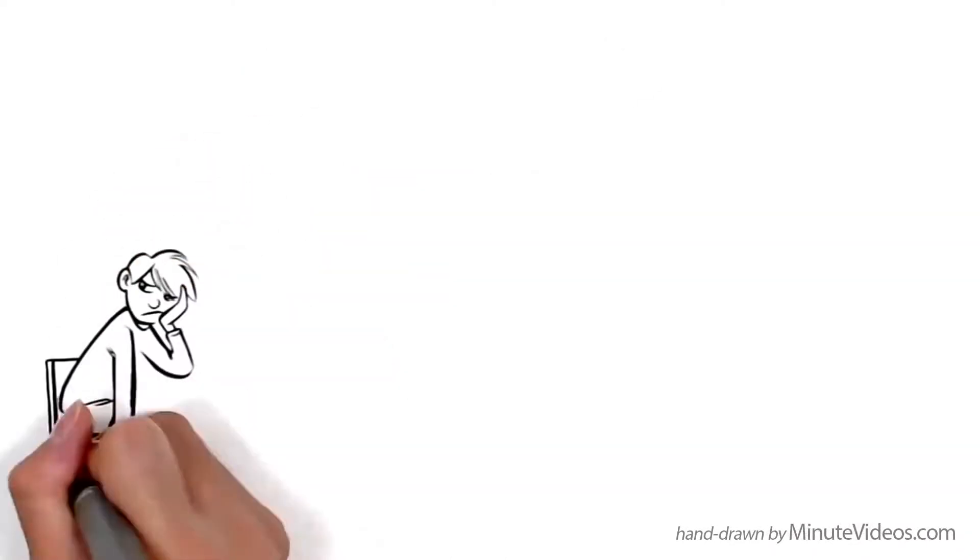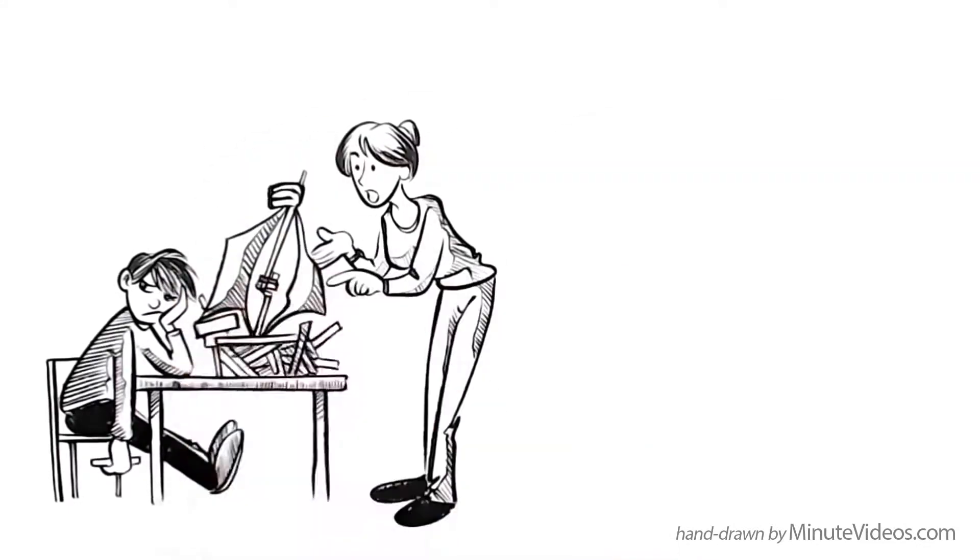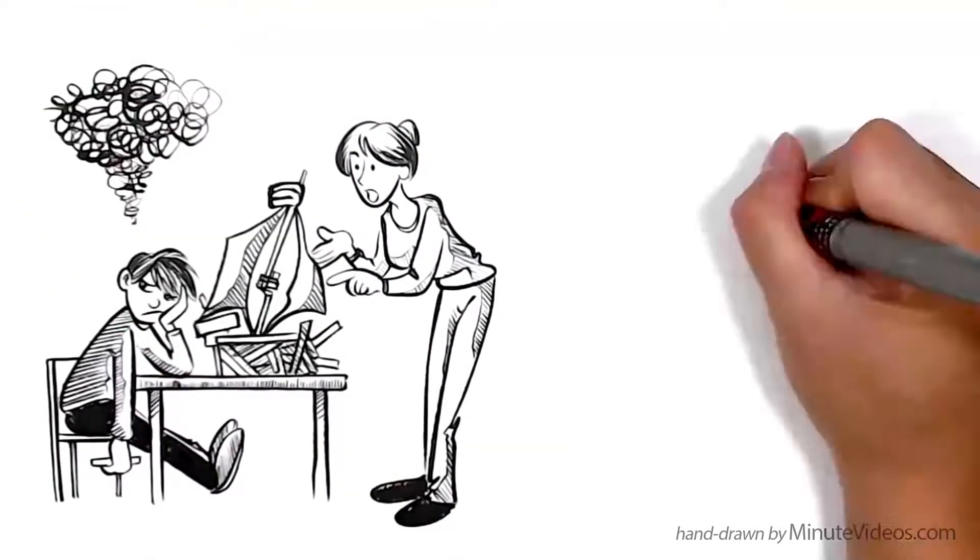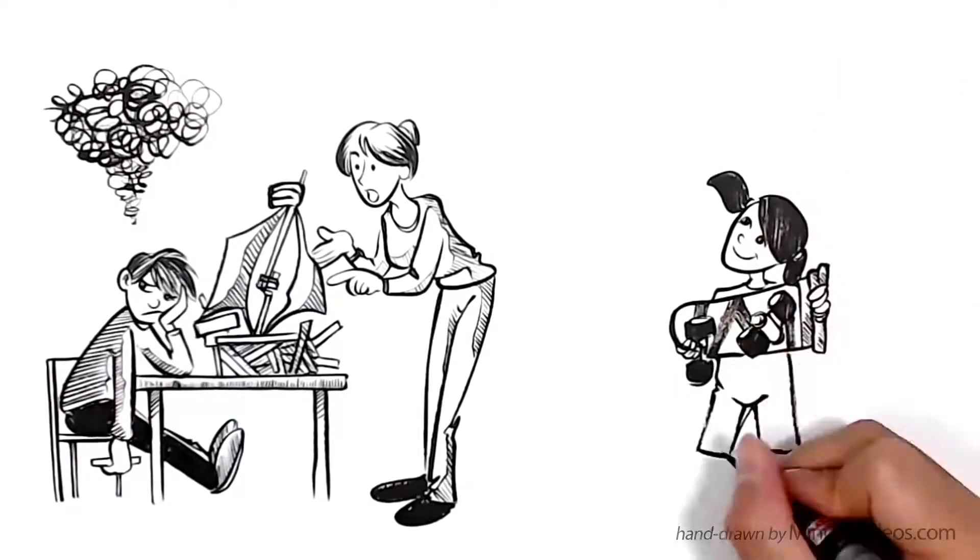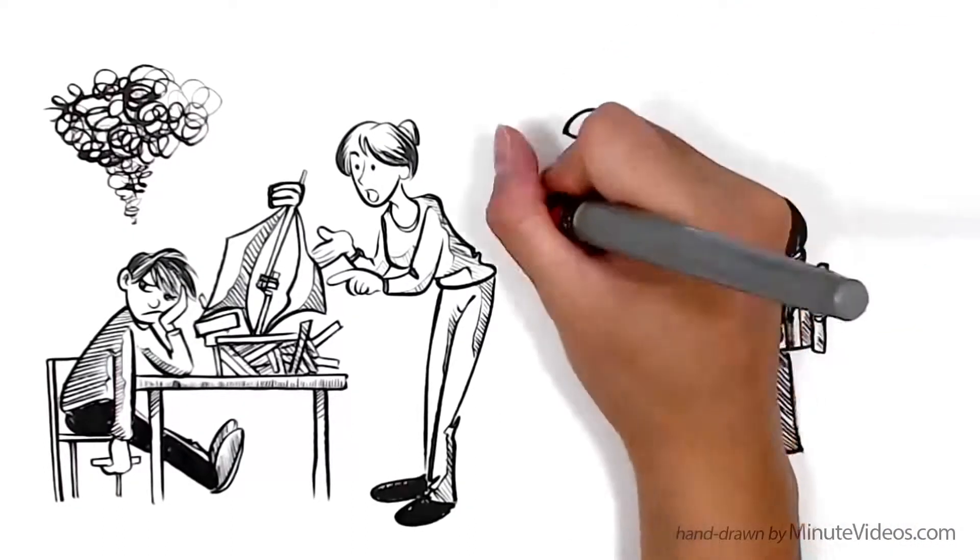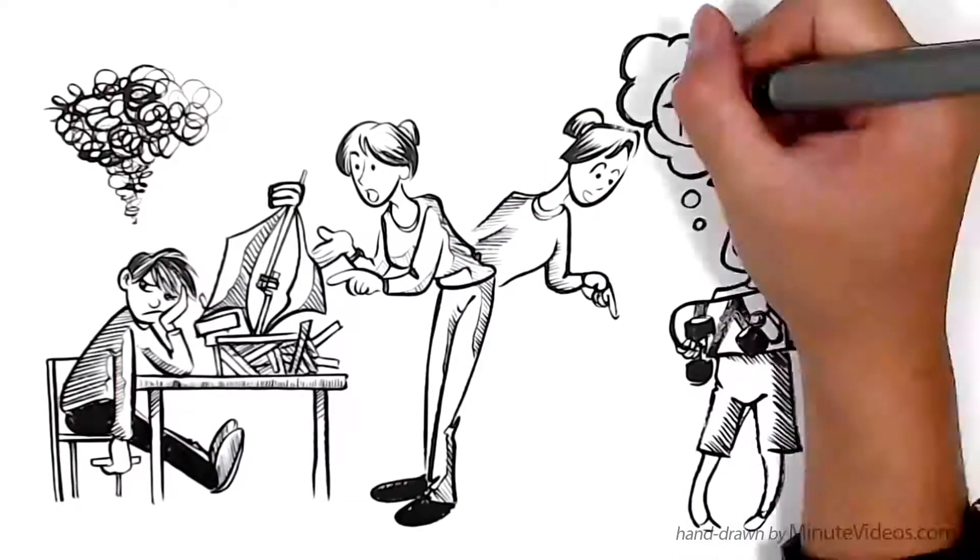Jay avoids feedback. If the teacher tells him how to improve an assignment he has been working on, he takes it personally. Ann knows that to improve, she needs to listen to constructive criticism. She also understands that it's not her that is being assessed, but the results of her work on that one day.